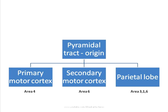The pyramidal tract originates from three sources: one-third comes from the primary motor cortex, another one-third comes from the secondary motor cortex, and the remaining one-third comes from the parietal lobe. As I mentioned below, the areas are there but it is not necessary to remember them.